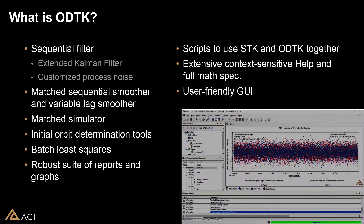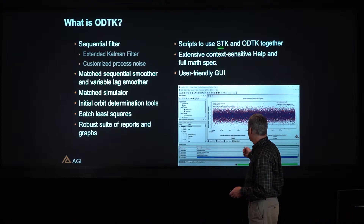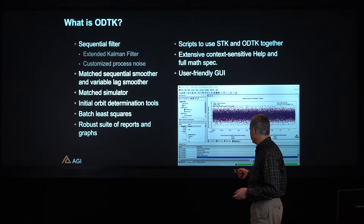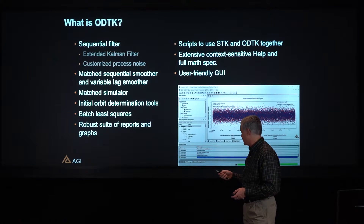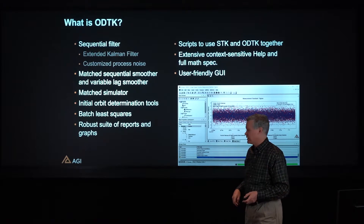ODTK stands for Orbit Determination Toolkit, and it's AGI's technology for doing satellite orbit determination. It's a desktop application with typical features: embedded graphing, plotting, reports, a GUI — all the things that make it an easy-to-use tool, combined with fairly sophisticated simulation and estimation technology.